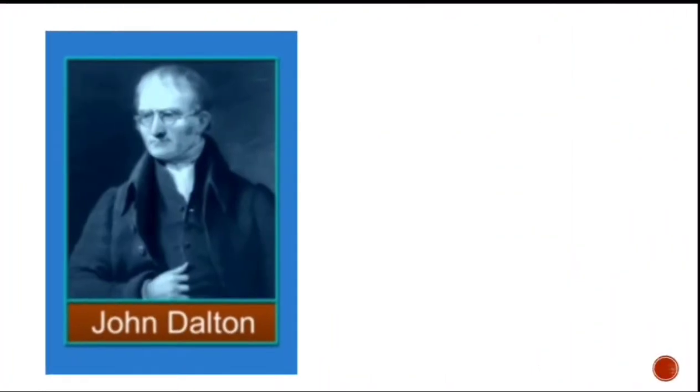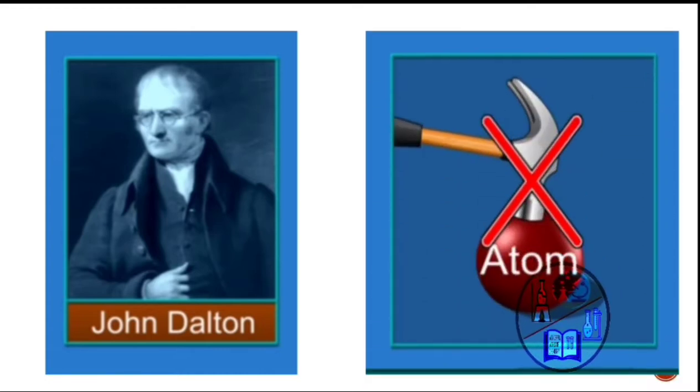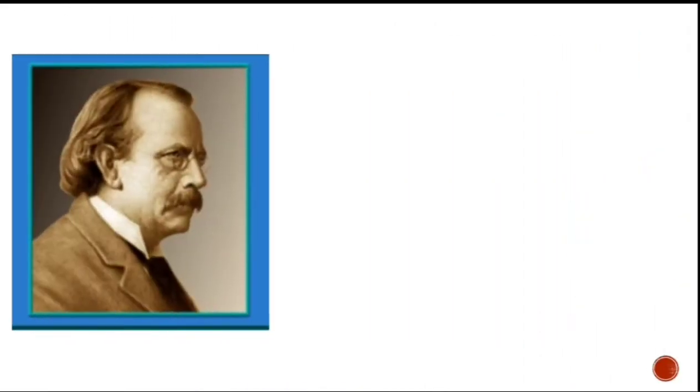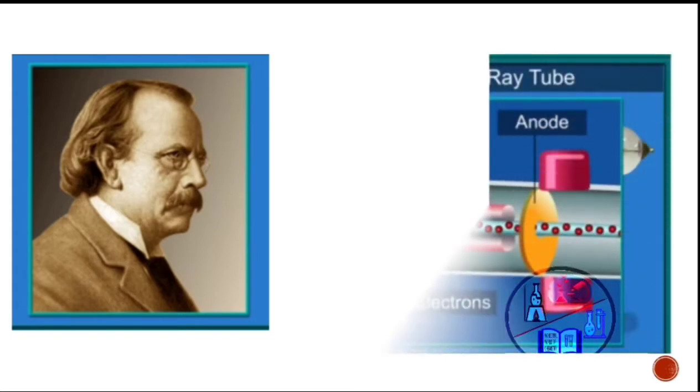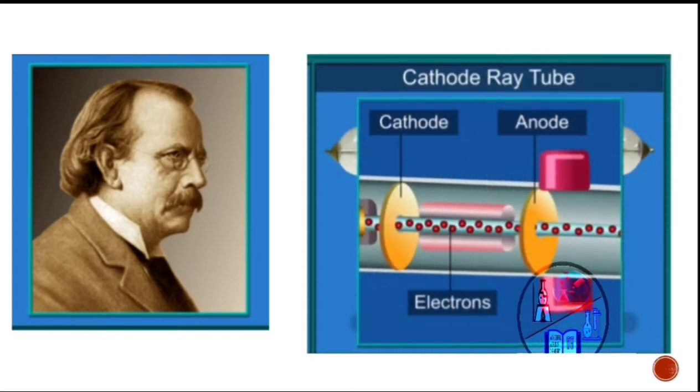John Dalton stated in his atomic theory that an atom is indivisible and indestructible. However, after that, J.J. Thompson conducted the experiment with the beams of particles in the cathode ray tube. He found that the particles were attracted towards the positive terminal of the tube. Thompson concluded that the particles must be negatively charged and called them electrons.